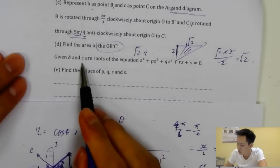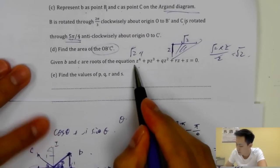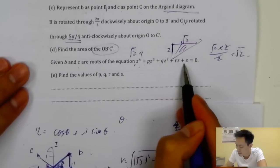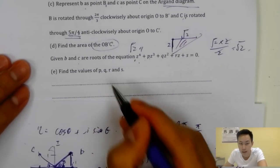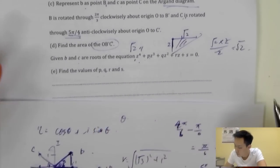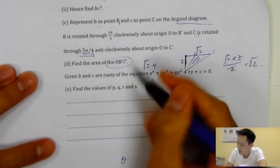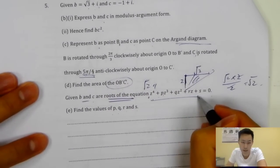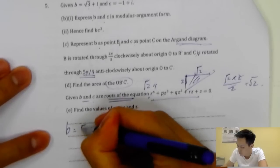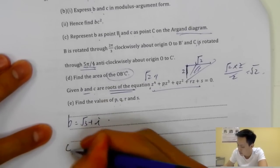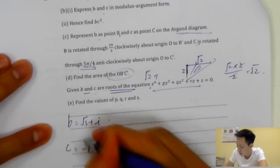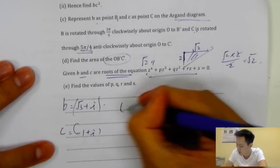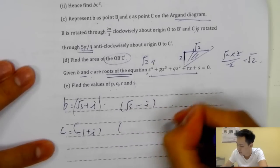Given that B and C are roots of Z^4 plus PZ^3 plus QZ^2 plus RZ plus S equals zero, find P, Q, R, S. Since the coefficients are real, complex roots come in conjugate pairs. So the four roots are: root three plus i, root three minus i, minus one plus i, and minus one minus i.